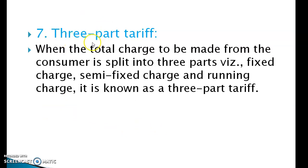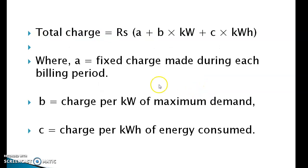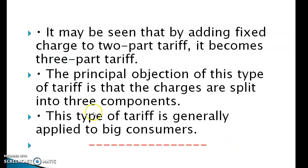Seventh: three-part tariff. When the total charge to be made from the consumer is split into three parts — fixed charge, semi-fixed charge, and running charge — it is known as three-part tariff. Total charge = A + B × kW + C × kWh, where A is the fixed charge made during each billing period, B is the charge per kilowatt of maximum demand, and C is the charge per kilowatt hour of energy consumed. It may be seen that by adding a fixed charge to the two-part tariff, it becomes a three-part tariff.